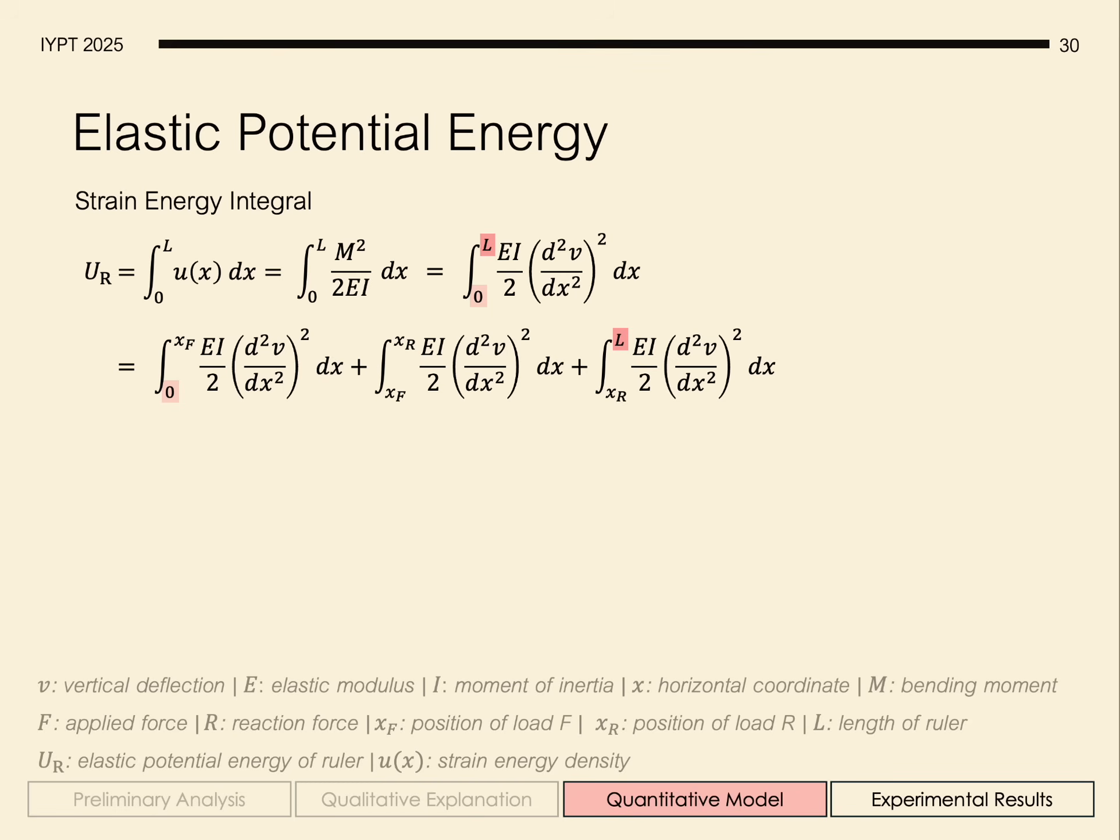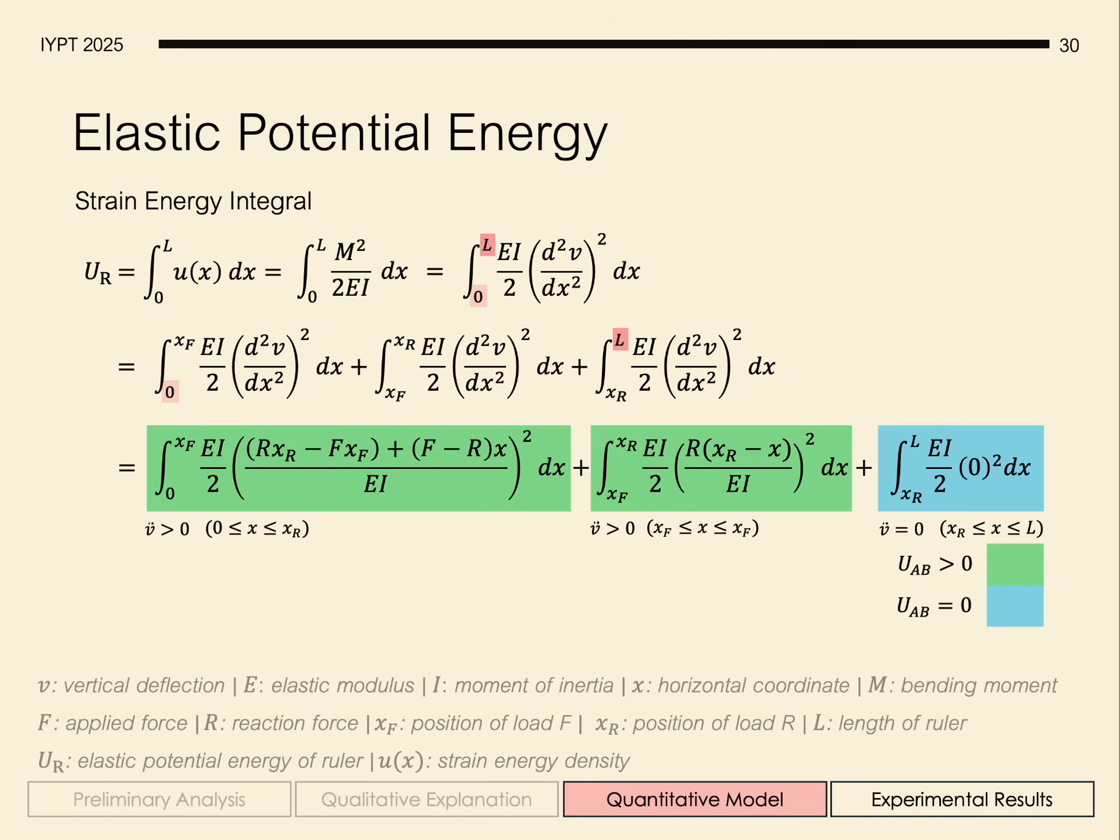Substituting the second position derivative of the deflection into the integral, notice that the third term is equal to zero. Indeed, there is no curvature of the beam beyond the ball, so the potential energy associated with those segments of the rulers is zero. And this supports our explanation of why increasing the length does not actually increase the ejection velocity.